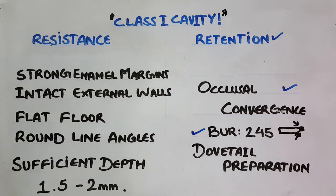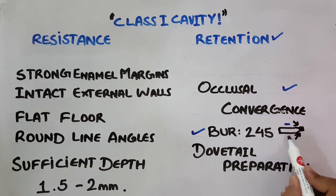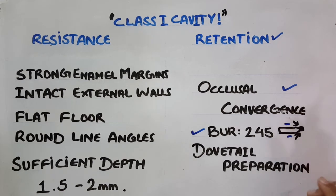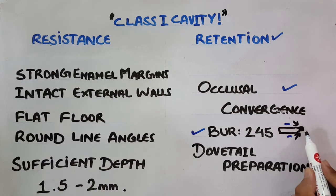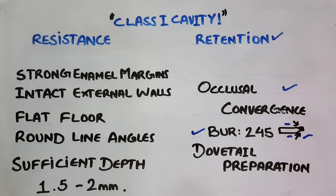The property of this burr is that its working end has a small taper, as shown here. Near its working end it converges and then diverges. So when we prepare the tooth, the deep portion would be wider and the superficial portion would be narrower — in other words, our preparation would converge occlusally.